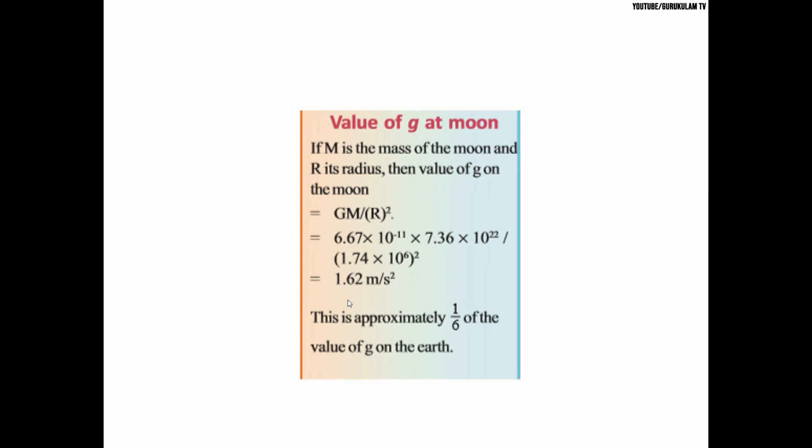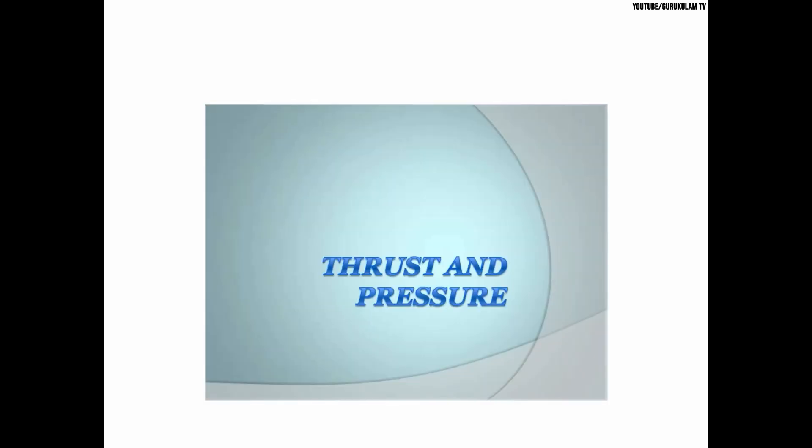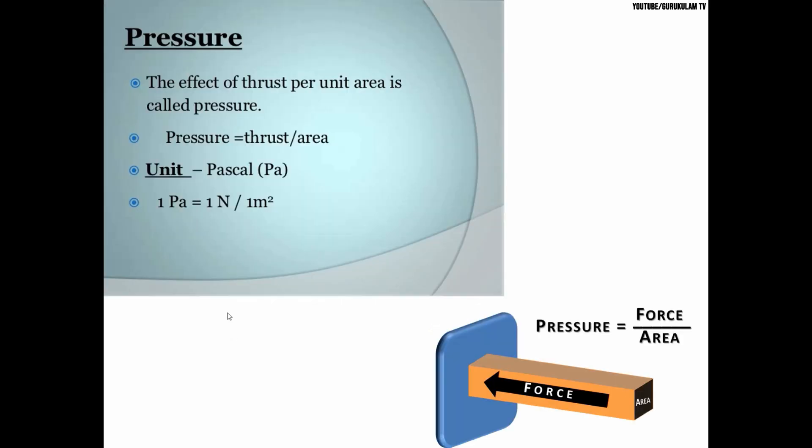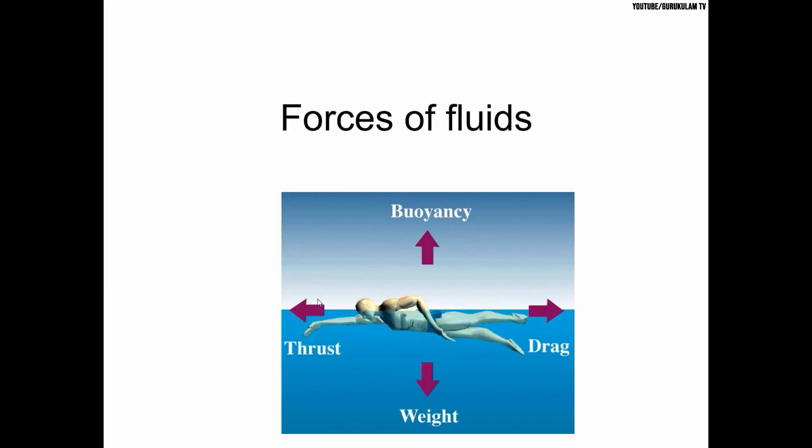Mass cannot be measured directly using a scale, but weight can be measured directly. Thrust is the force acting on a surface, and pressure is thrust per unit area. Pressure equals force by area, measured in pascals or newtons per meter squared.